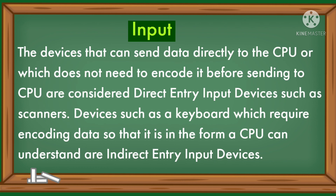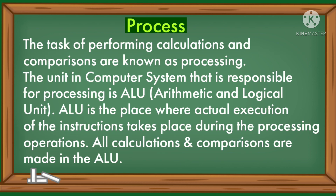Devices that can send data directly to the CPU, or which do not need to encode it before sending to the CPU, are considered direct entry input devices, such as scanners. Devices such as a keyboard, which require encoding data so that it is in a form the CPU can understand, are indirect entry input devices.